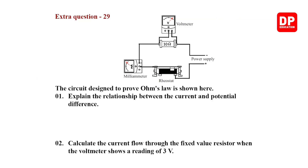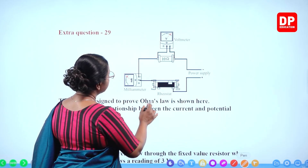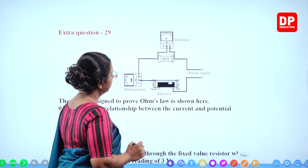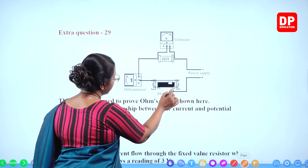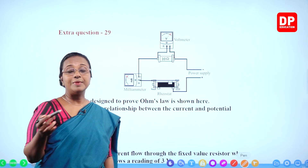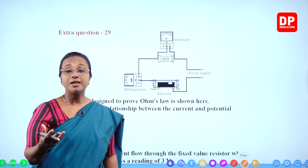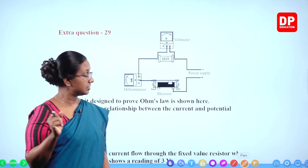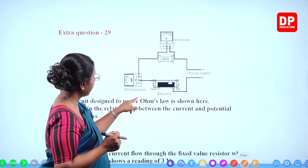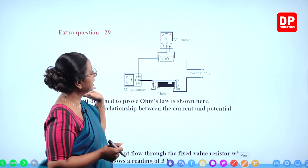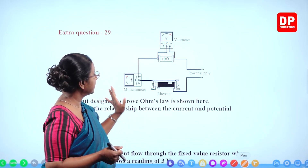Extra question 29: a diagram is given. A voltmeter is connected in parallel to a 10-ohm resistor, which is connected to a power supply. There is also a rheostat (variable resistor) and a milliammeter. An ammeter measures current in amperes; a milliammeter measures current in milliamperes — smaller units for smaller current values.